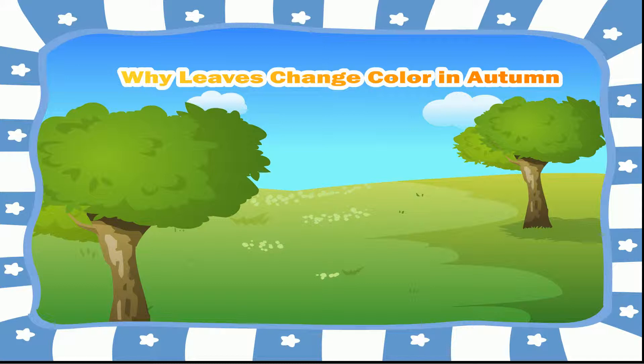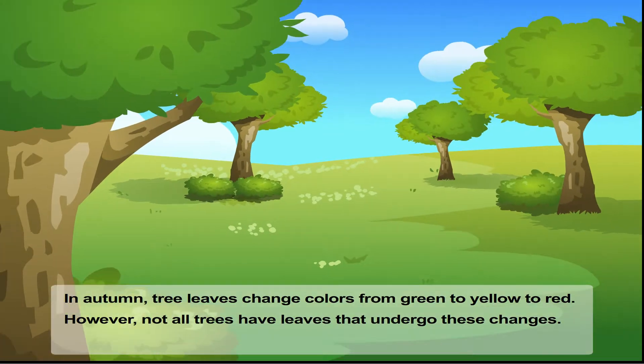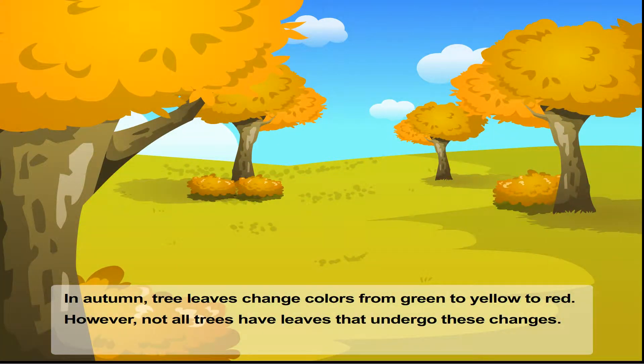Why Leaves Change Colour in Autumn. In autumn, tree leaves change colours from green to yellow to red.